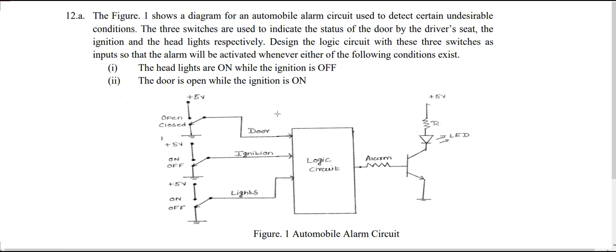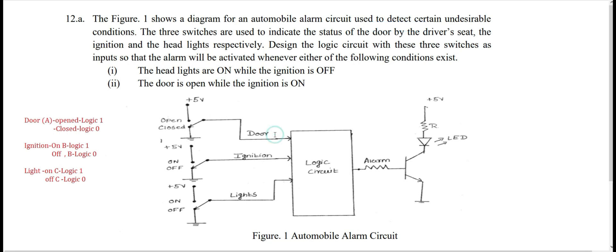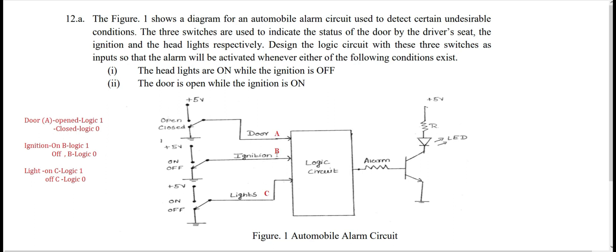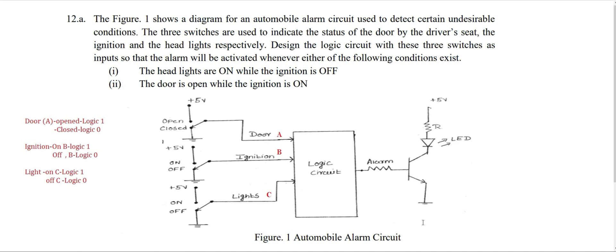The first step is to decide the number of inputs and outputs. From the logic diagram we can see there are three inputs and one output — the output being the alarm activation. We assign variable A for door, B for ignition, and C for lights. So we have three input variables: A corresponds to door, B for ignition, and C for lights.